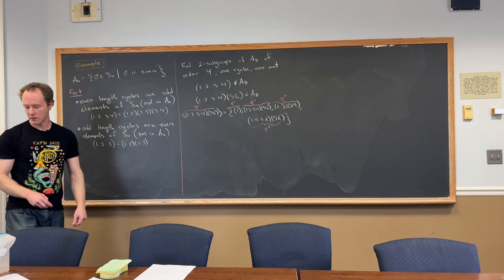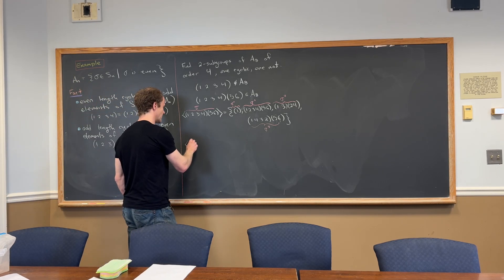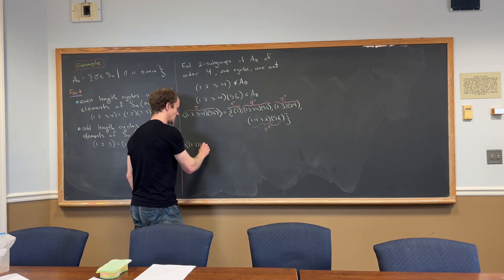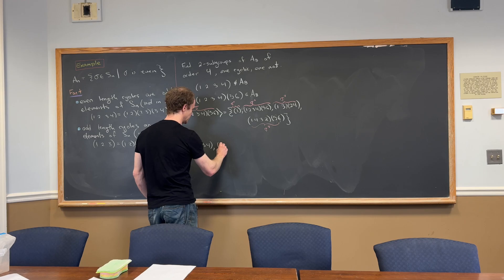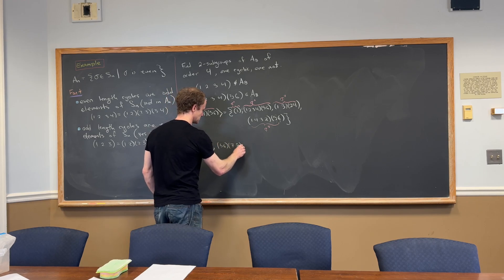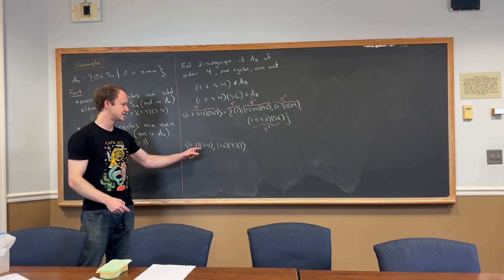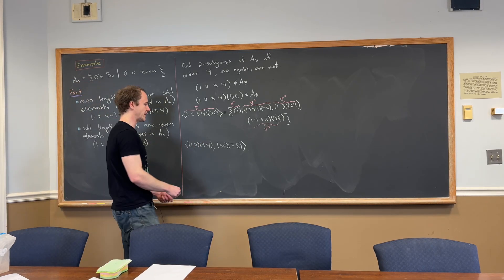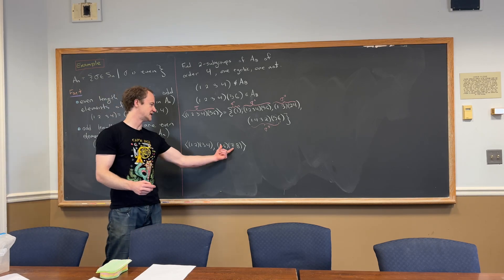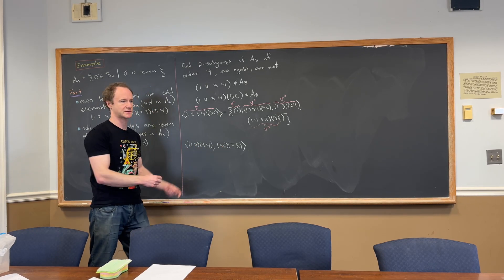And then we could write down one that's not cyclic as well. There are a bunch of choices. I think maybe the lowest hanging fruit choice would be a subgroup generated by the following two elements: (1,2,3,4) and (5,6,7,8). Those two elements. So we know that it's not cyclic because this is definitely not a power of this. And vice versa.